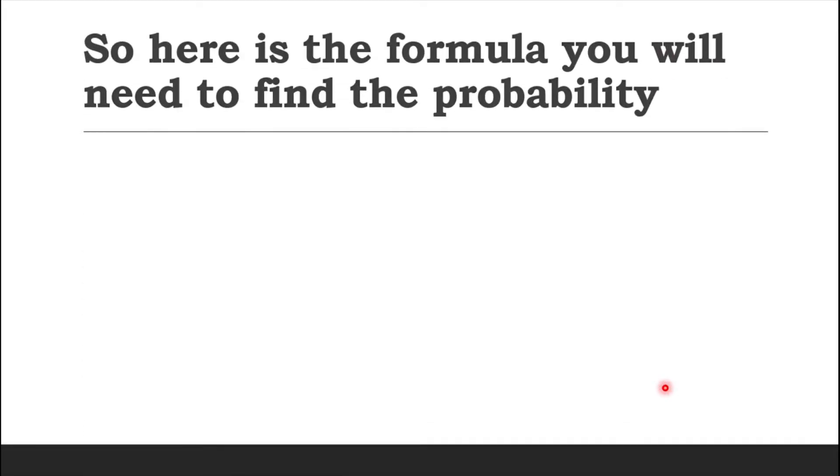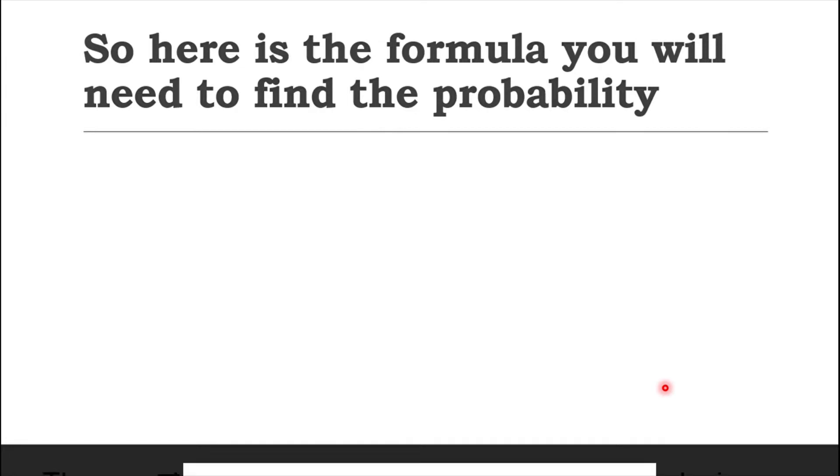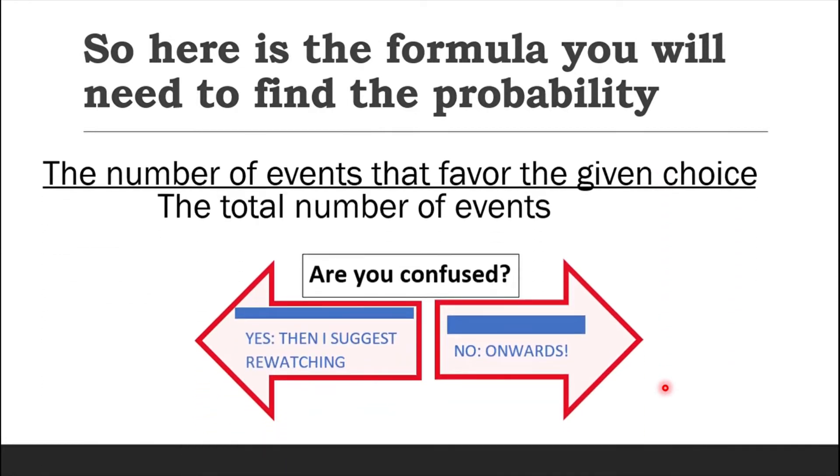The outcome is a 6 and we need to find out how likely it is. So, here's the formula. The number of events that favor the given choice over the total number of events.